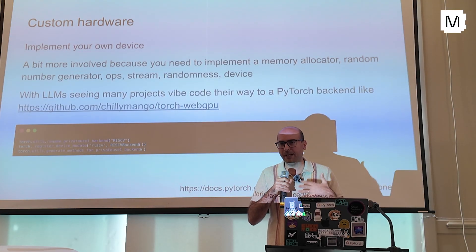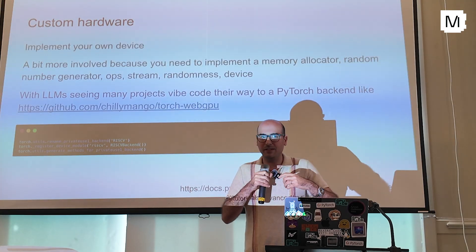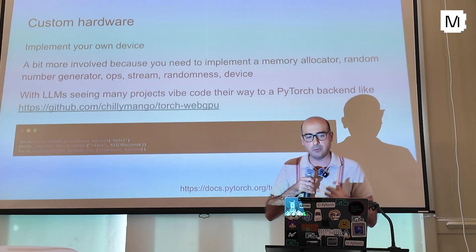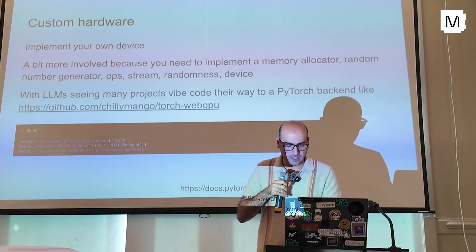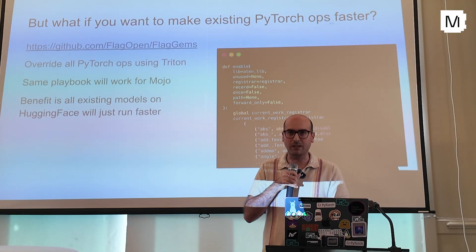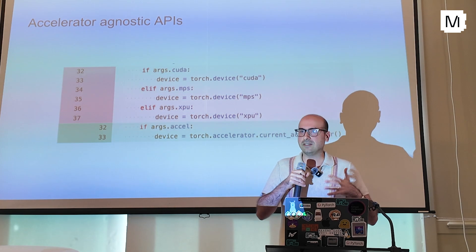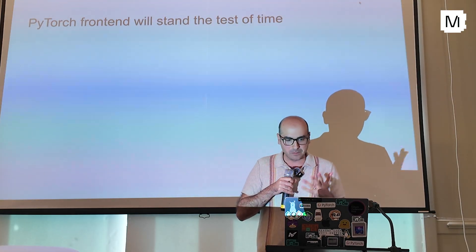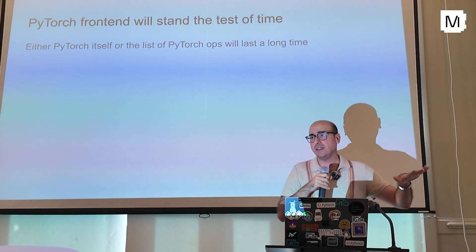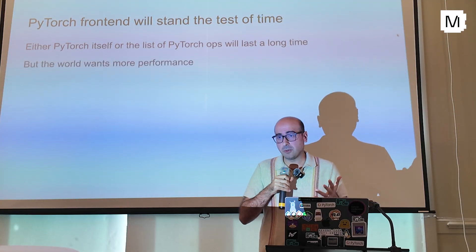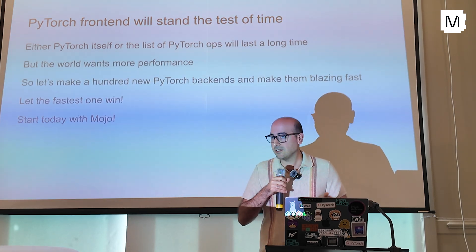Depending on how low-level the programming language is — and we're all going to learn today what Mojo is like, whether it's closer to Triton or whether you have to worry about custom memory allocations and pseudorandomness — we also have an API for you to register your own device, so you could do something like torch.device('mojo') and that'll effectively be a fully fledged device and accelerator. We also have a device-agnostic accelerator API to remove a lot of if-conditions in your code. To conclude: the PyTorch front end will stand the test of time even if PyTorch itself doesn't survive. The list of PyTorch ops will stand the test of time as long as deep learning continues as a programming paradigm. But the world wants more performance, so we should make 100 new PyTorch backends, make them blazing fast, and let the fastest one win. Let's give Mojo a shot today — thank you everyone.